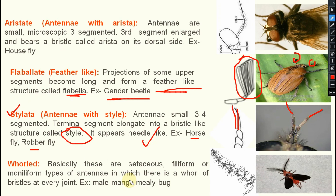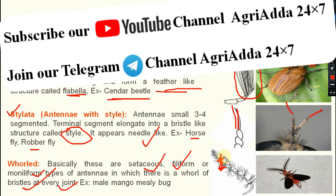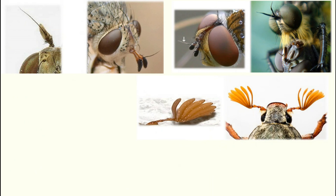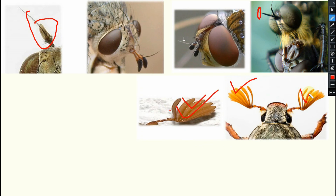And the last one, but not the least — the hold antenna. It is somewhat a mixture of things — these are setaceous, filiform, or moniliform antenna in which there is a whorl of bristles at every joint. It is present in case of male mango mealybug. In case of female mango mealybug, their antenna is more or less reduced, but in case of male mango mealybug it is developed and that is your hold antenna. Here you can see: this is your aristate, this is your stylate, and this is your flabellate type of antenna.